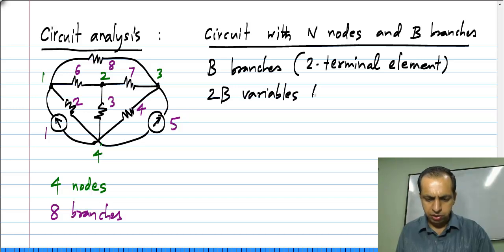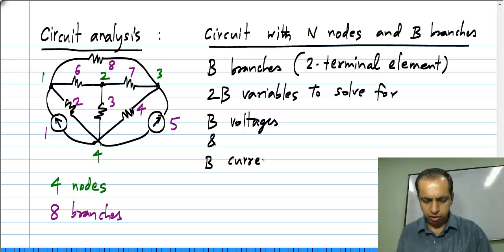Then we will have 2B variables to solve for basically, B voltages and B currents.